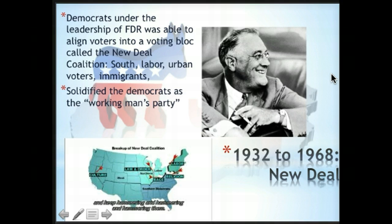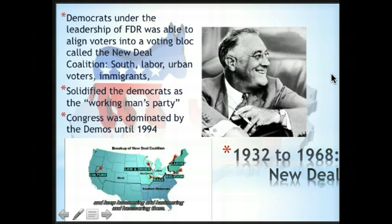This solidified the Democrats as the working man's party. Just like in the late 1800s the Republicans became the big business party, now in 1932 the Democrats had their coalition of support from the working man. And although the New Deal coalition party era went from 1932 to 1968, Congress was dominated by Democrats up until 1994.